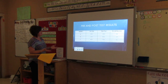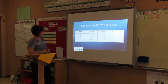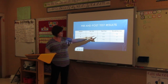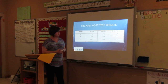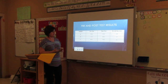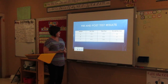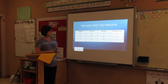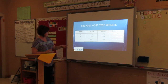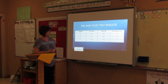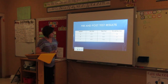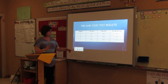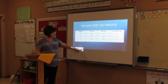Looking at comparing the pre and post-test results: Student A went from zero out of eleven on the pretest to five out of eleven on the post-test — an overall increase of five points. Student B went from one out of eleven to six out of eleven — a five-point increase. Student C went from six out of eleven to seven out of eleven — a one-point increase. Overall, each student did increase.